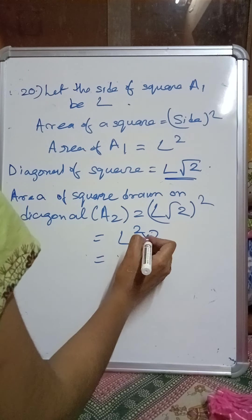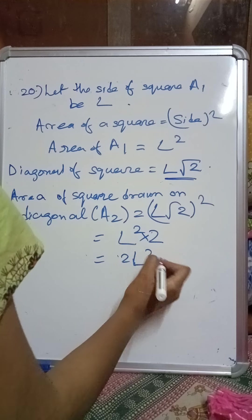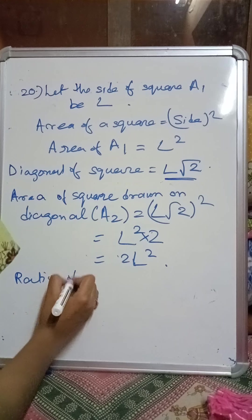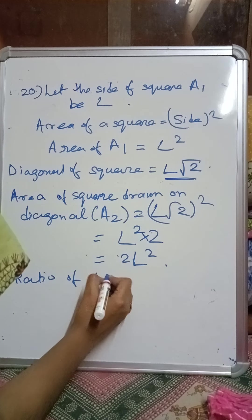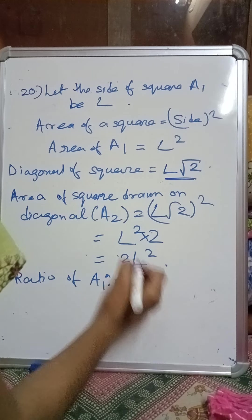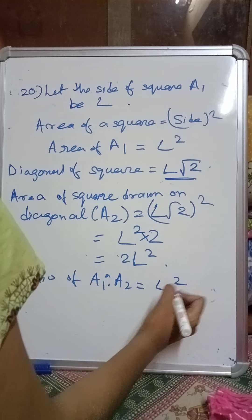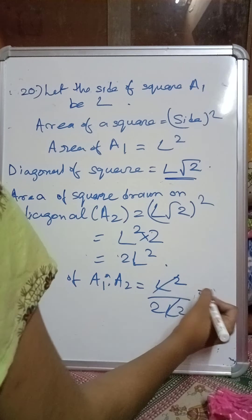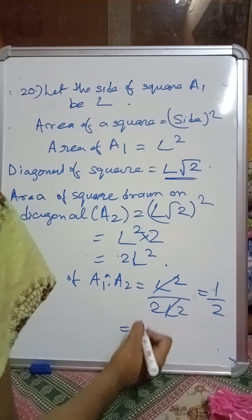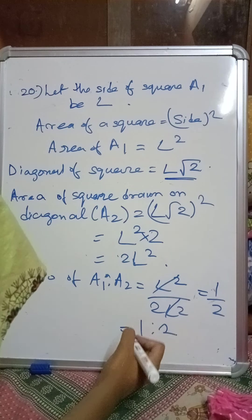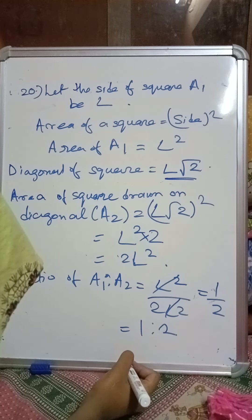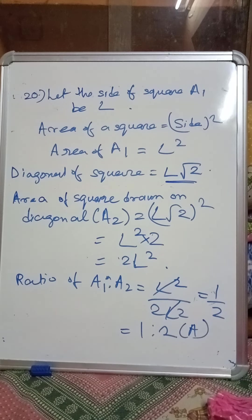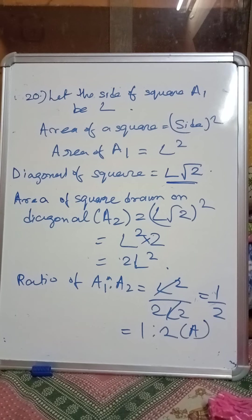So what is the ratio now? A1 to A2 = L squared to 2L squared. The L squared cancels, giving us 1 to 2, which is option number A. I hope you have understood. Thank you.